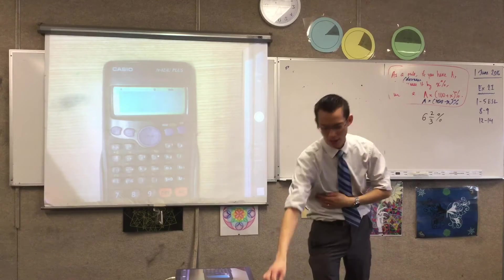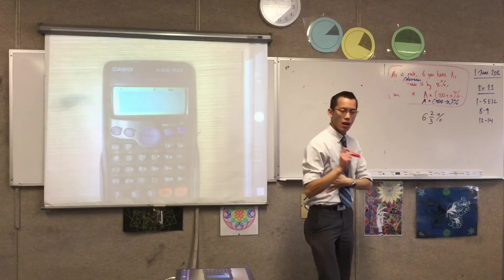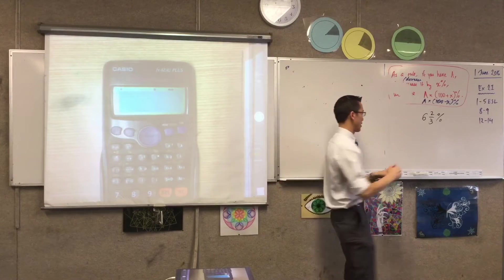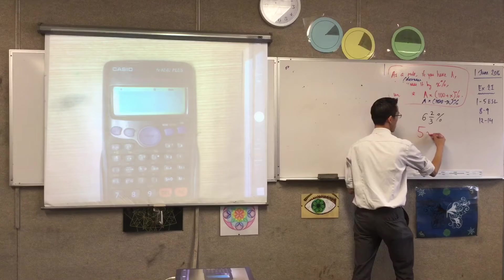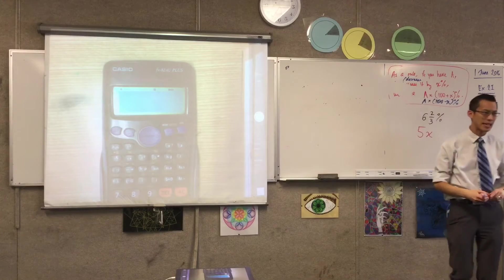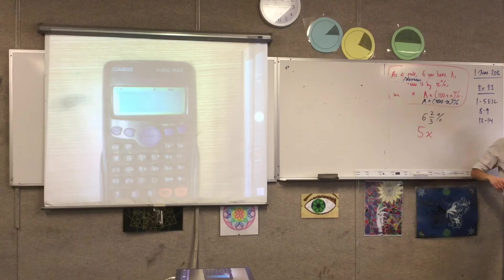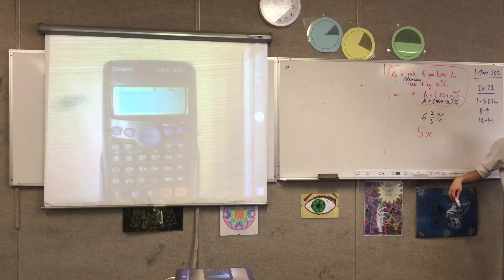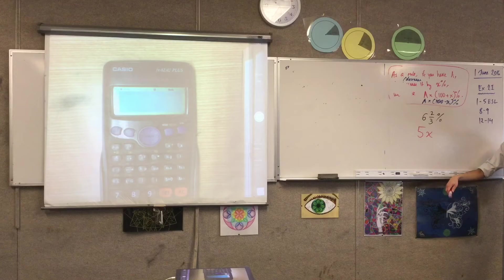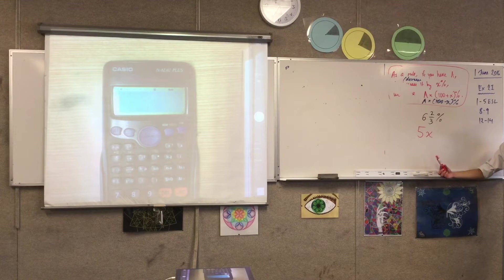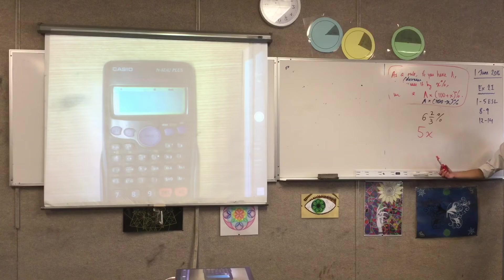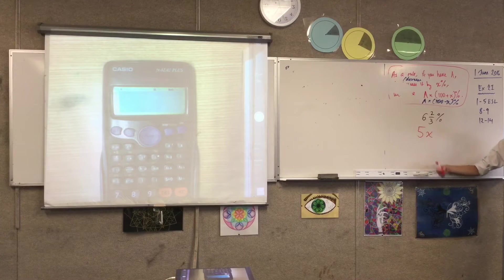To explain first, and this is what I was mentioning to Akhil a second ago, if I gave you something like this, 5x, so this is like classic algebra, we've seen this hundreds of times before. There's no operation between 5 and x, so what operation is implied? It's multiplication, right? We mean 5 lots of x, 5 times x.